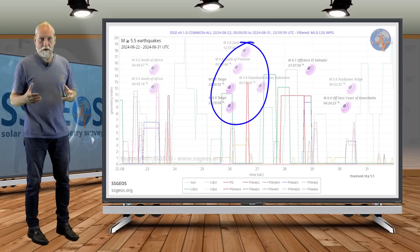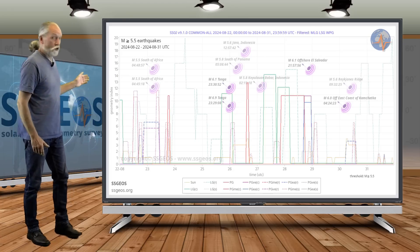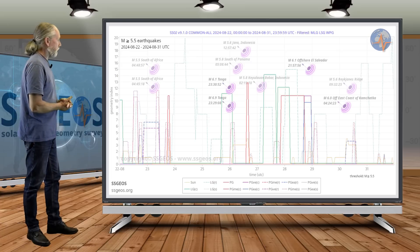26th. Remember I said the potential mid-6 magnitude around the 25th. We actually had a 6.9 in Tonga, and it was followed by some stronger earthquakes on the 26th.